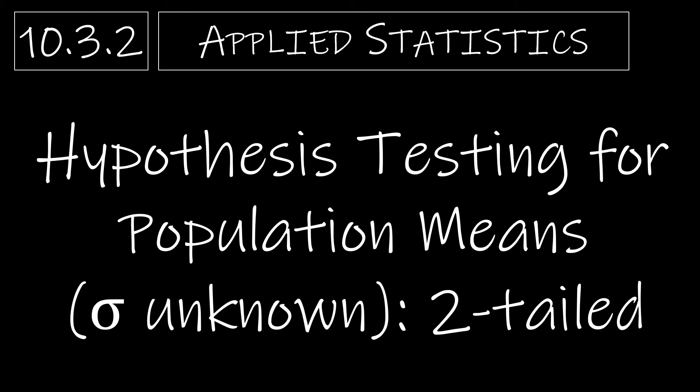In this video, we're going to continue to look at hypothesis testing for population means where sigma is unknown, and in this case, we'll look at two-tailed examples.